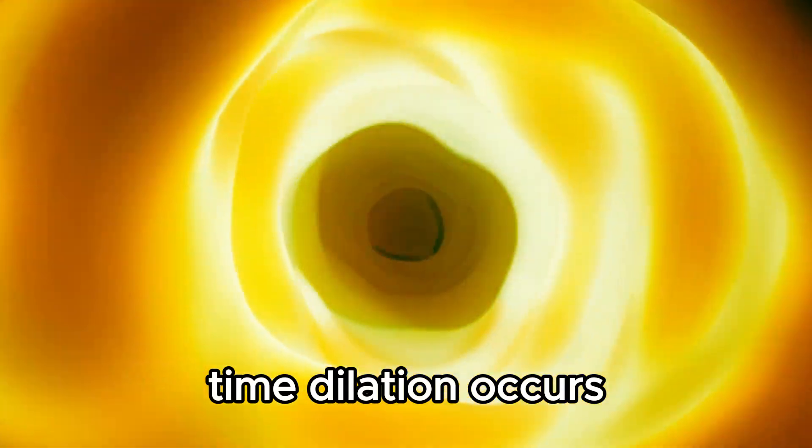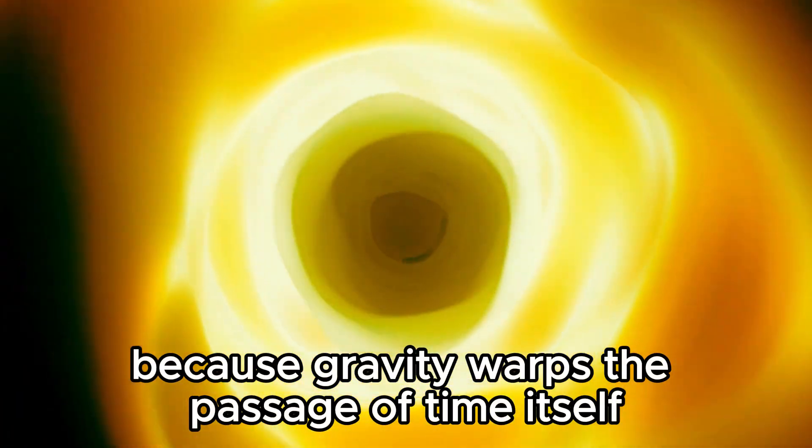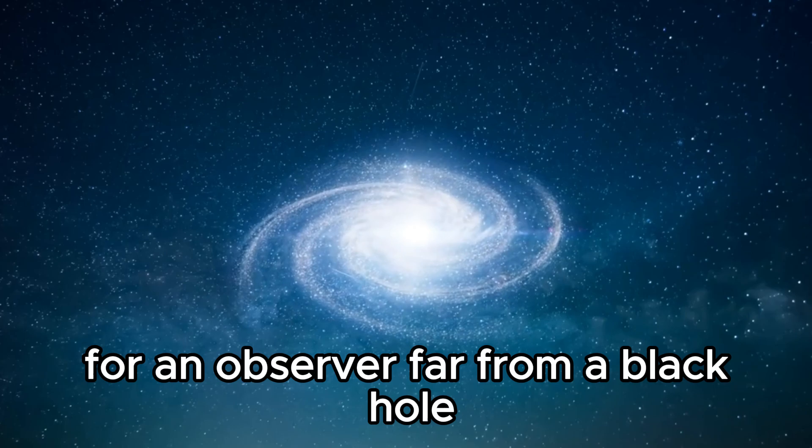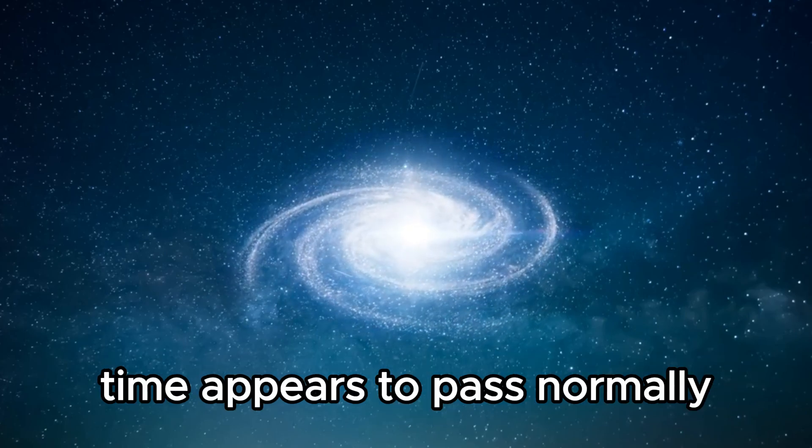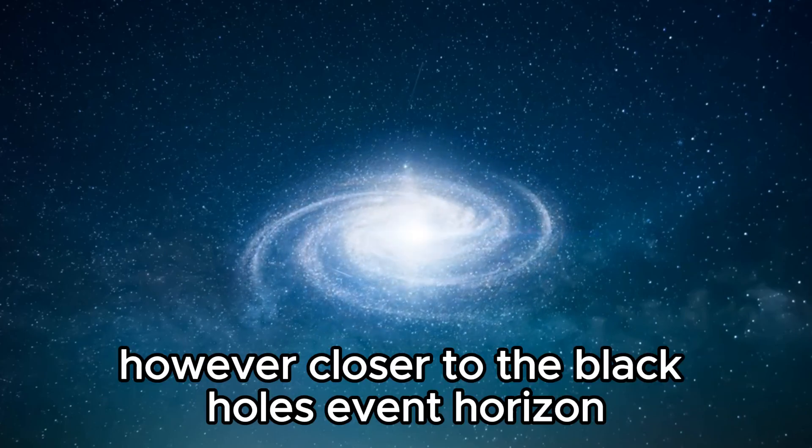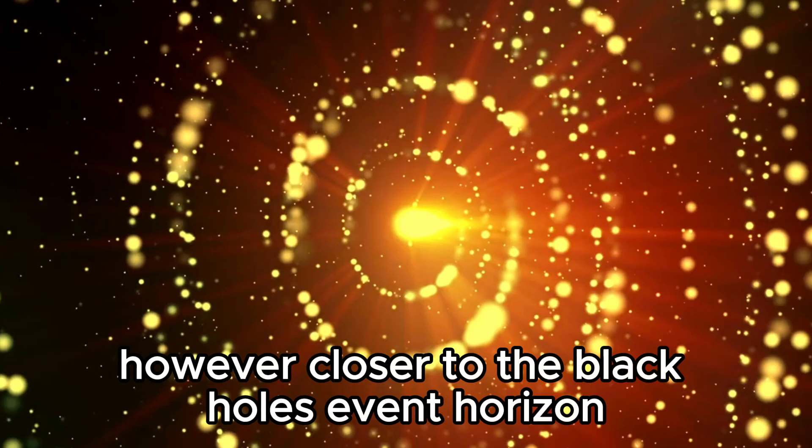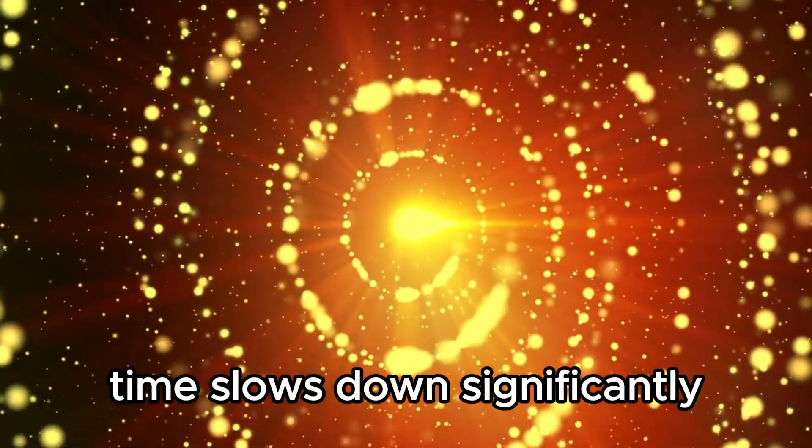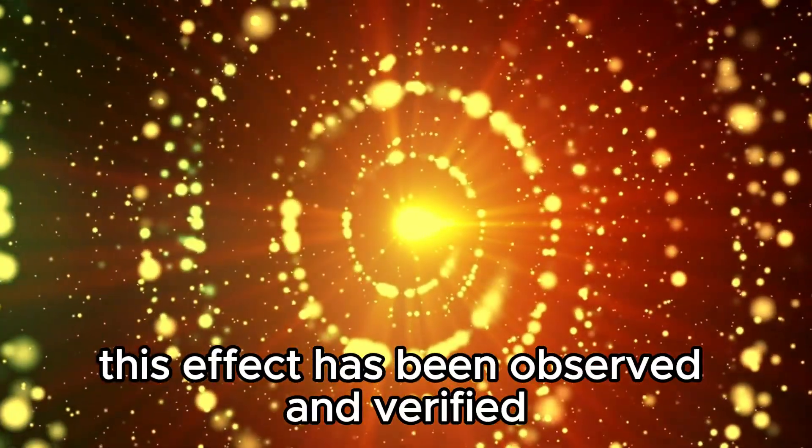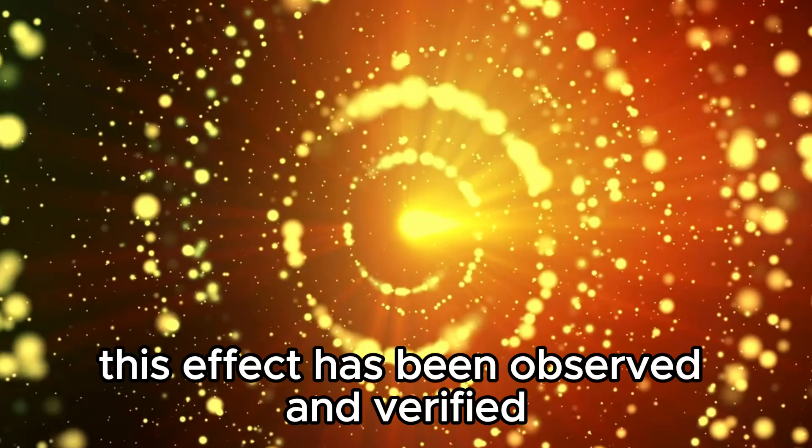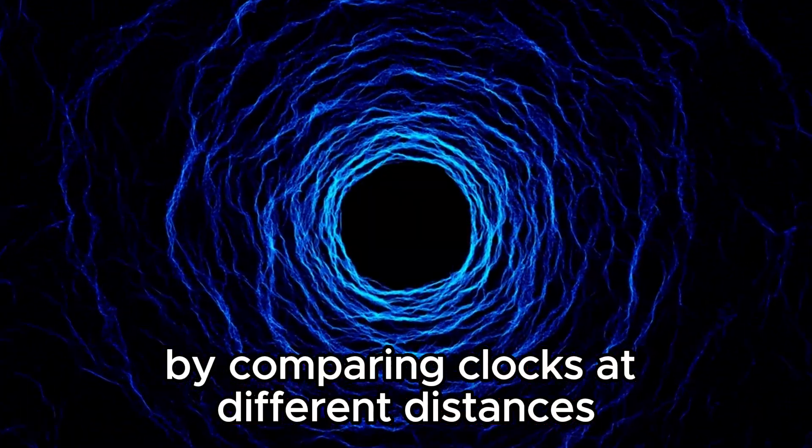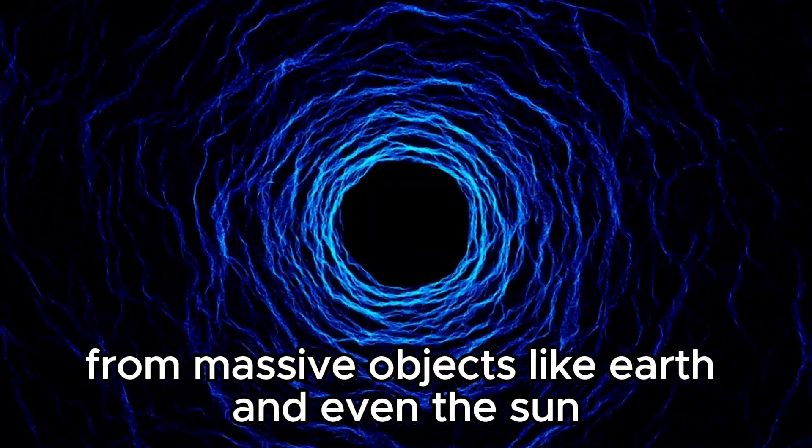Time dilation occurs because gravity warps the passage of time itself. For an observer far from a black hole, time appears to pass normally. However, closer to the black hole's event horizon, time slows down significantly. This effect has been observed and verified by comparing clocks at different distances from massive objects like Earth and even the Sun.